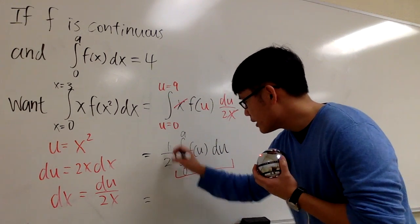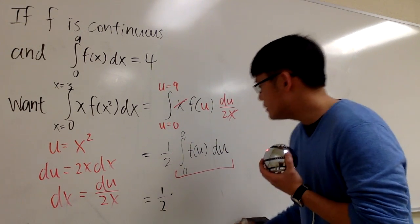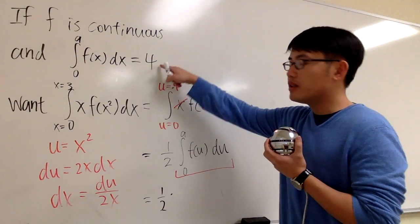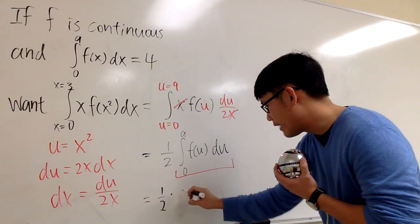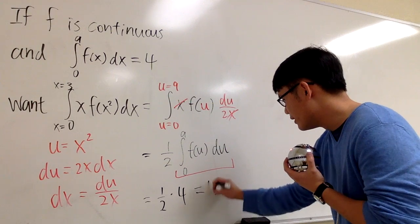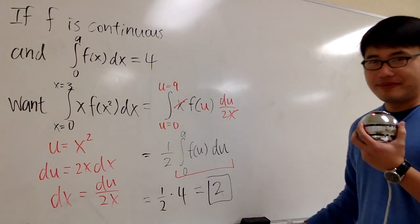This right here will be 1 half times the value of this integral, which is given to be 4. So that means 1 half times 4. Altogether you will get 2, and this is the answer. That's it.